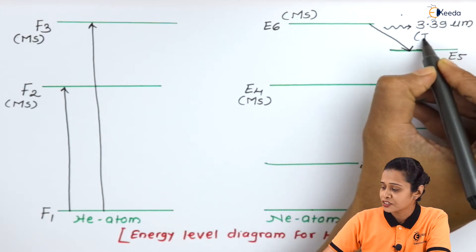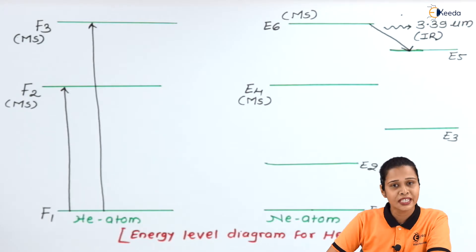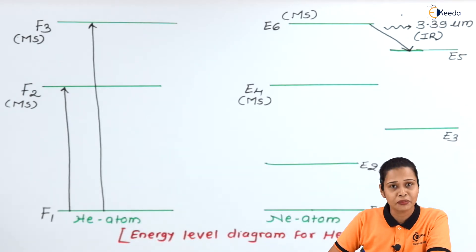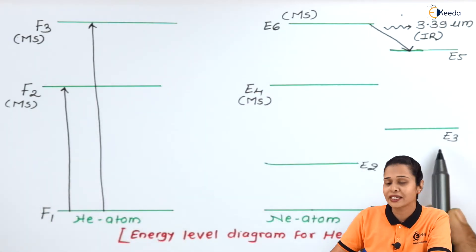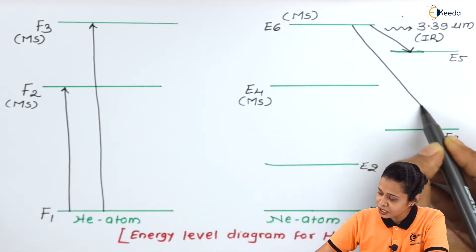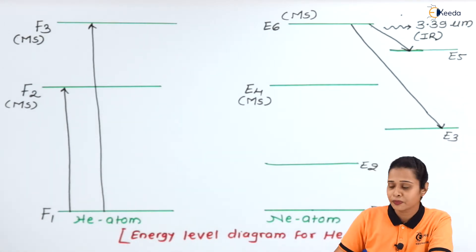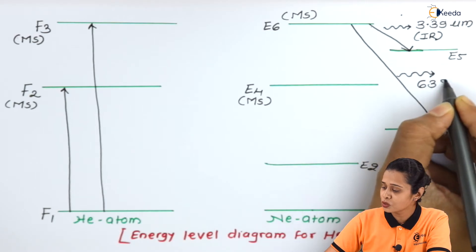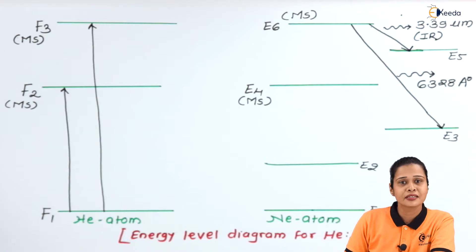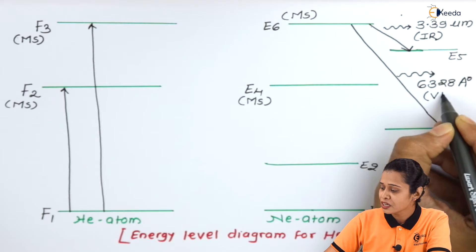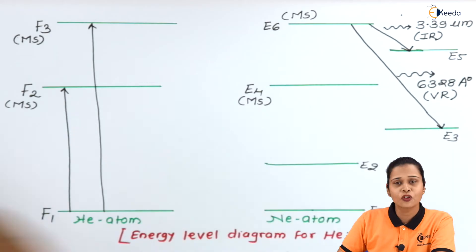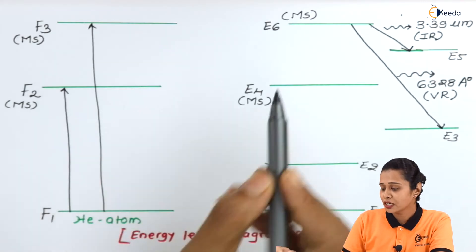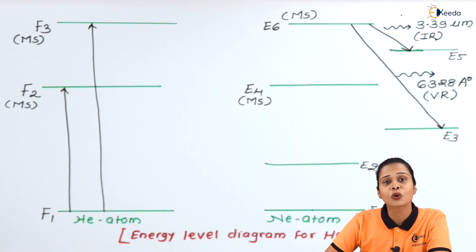The second possibility is that E6 is a metastable state and E3 is only an excited state, meaning E3 is virtually empty. So there is population inversion between E6 and E3 as well. The transition from E6 to E3 gives laser action — a stimulated emission — with a wavelength of 6328 angstrom units, which is in the visible region as a red color laser beam. Note that a transition from E6 to E4 is not possible since both are metastable states, making population inversion difficult, so no laser action occurs for that transition.